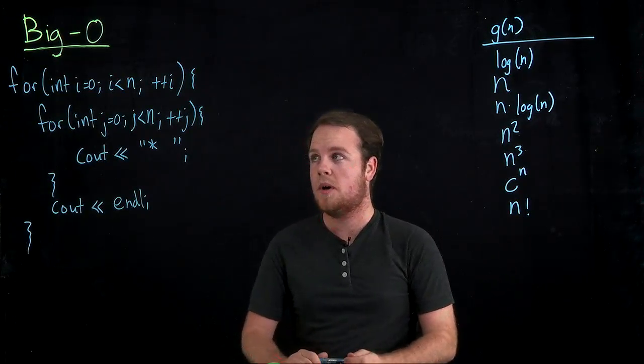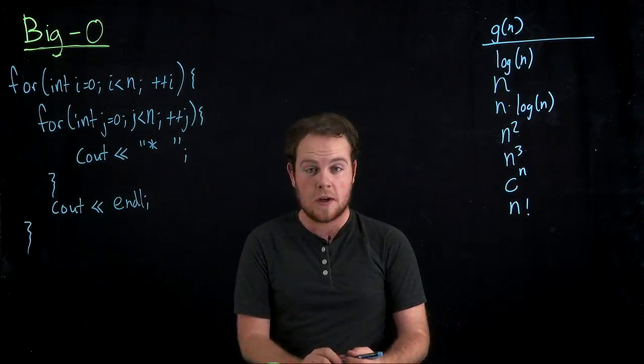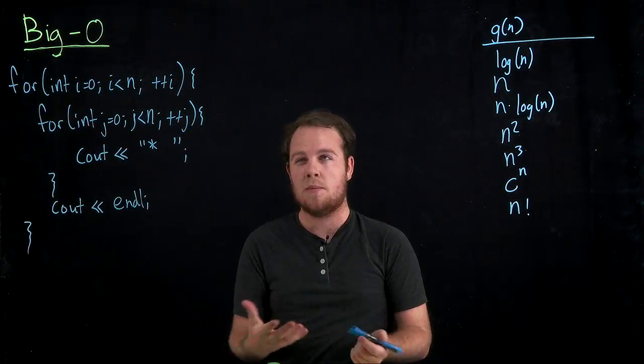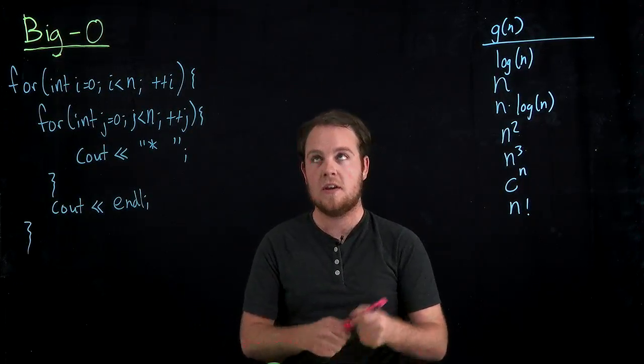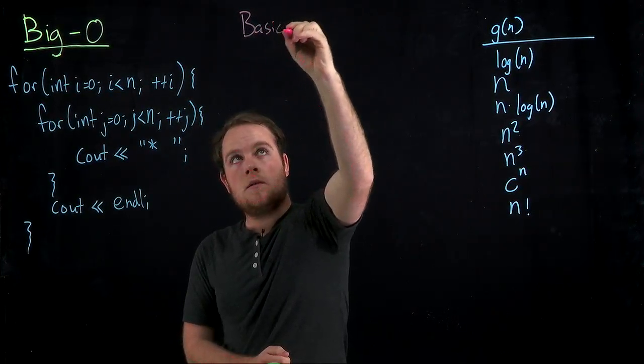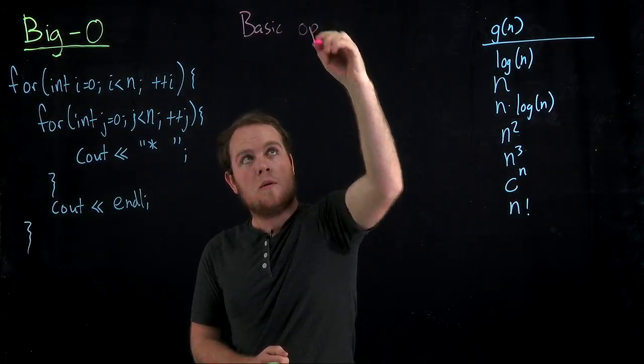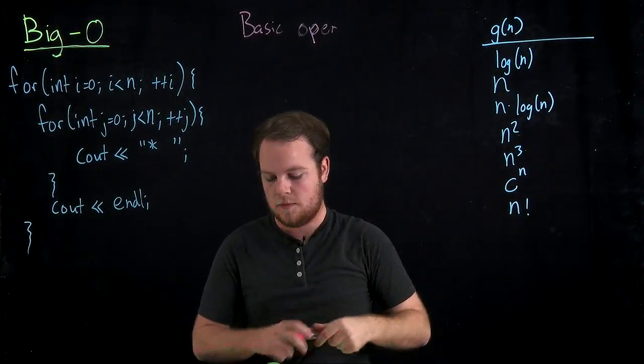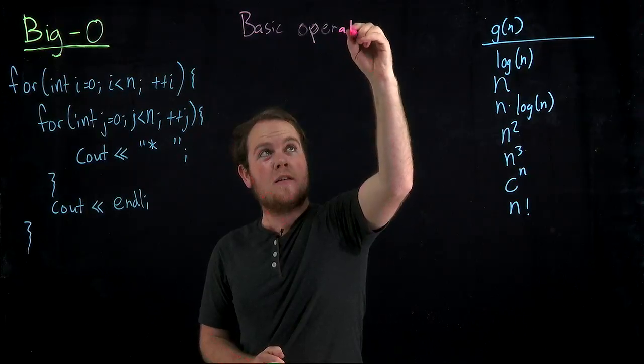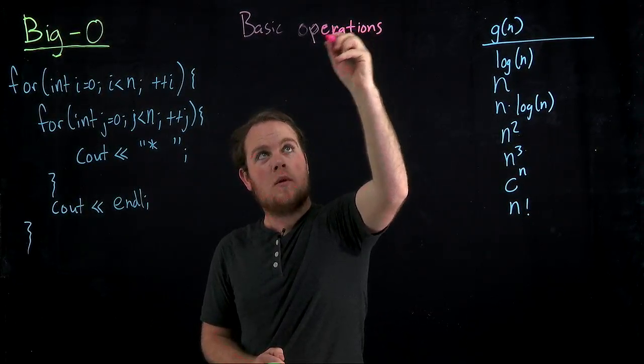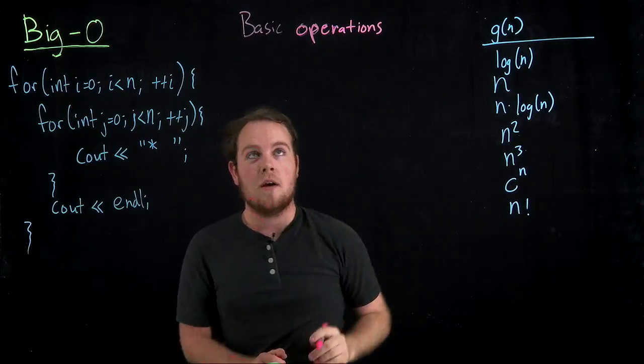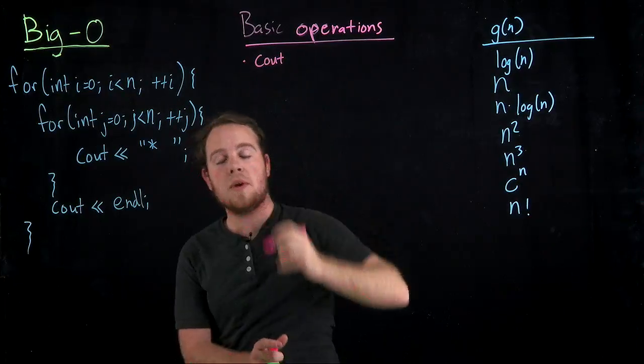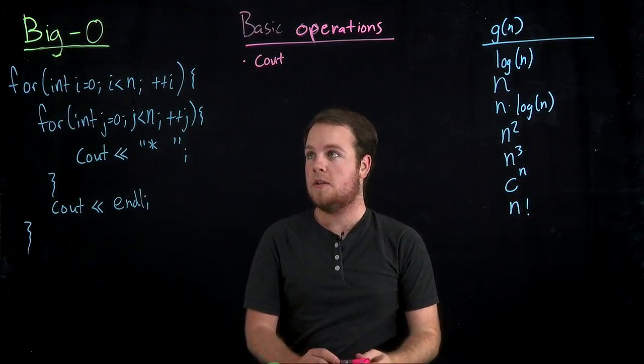So let's take a look at an example where we have a bit of code. And we want to figure out the runtime of this algorithm. The first thing you need to do is define your basic operations. So we're going to say that our basic operations are every time we hit a cout statement. So cout is our basic operation.